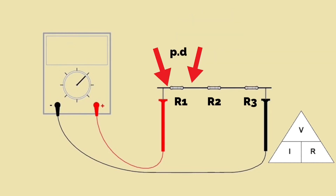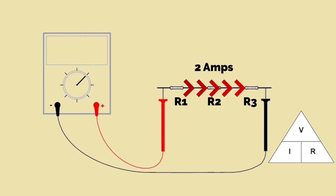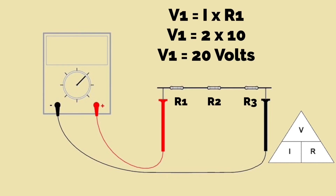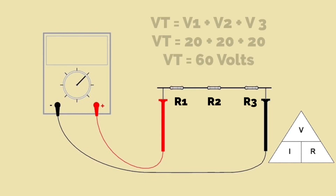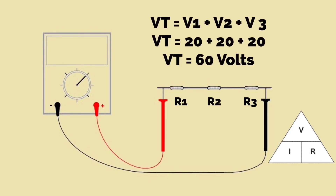The current equals 2 amperes. The potential difference across each resistor can also be worked out. The circuit current is 2 amps and each resistor is 10 ohms, so V equals I times R: 2 times 10 equals 20 volts appearing across resistor 1. As resistors 2 and 3 are of equal value, 20 volts also appears across each of those. Adding them together: 20 plus 20 plus 20 gives the total supply voltage of 60 volts.